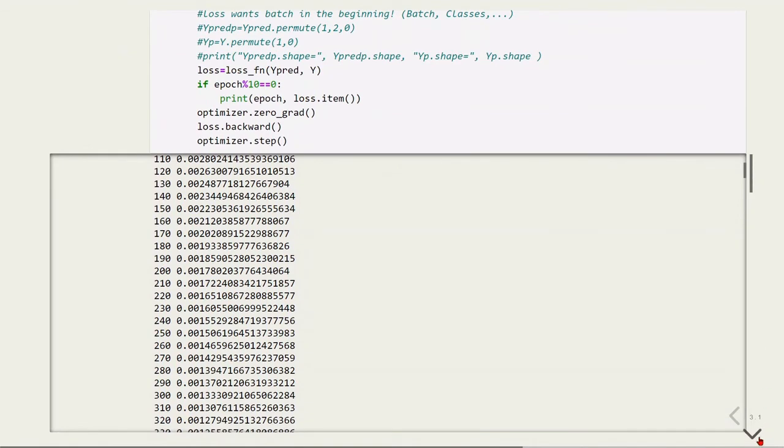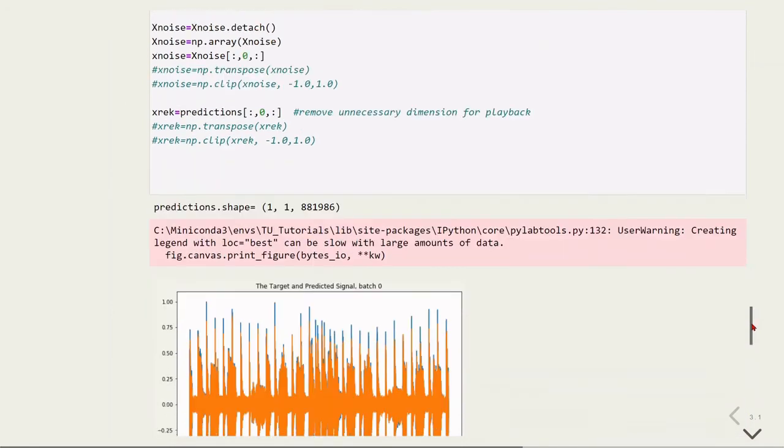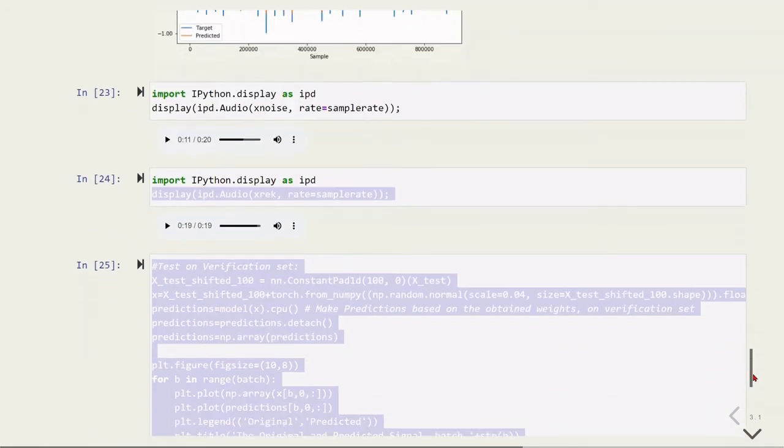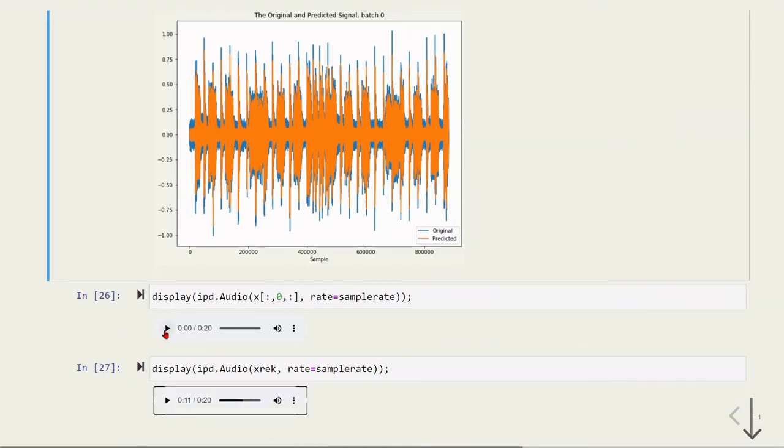Here we can also do the same for the verification, not using the same file as we trained but using a different file. Here we have our reconstructed signal and here was the original, the input of the model. We can perceive the noise. It seems that our denoising autoencoder is working.